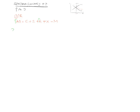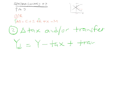Second, we can change taxes and transfer payments. Remember, disposable income is equal to income minus tax plus transfers. A change in disposable income will have an impact on consumption. Once people start spending more, businesses will start investing more. When you increase people's disposable income, you will increase consumption, and when consumption goes up, aggregate demand goes up.